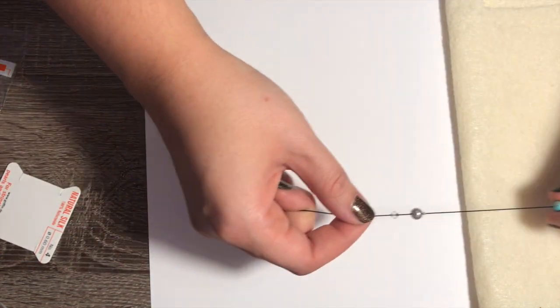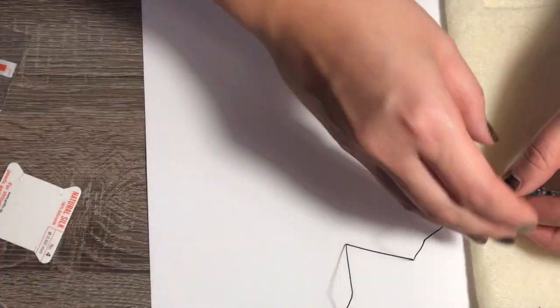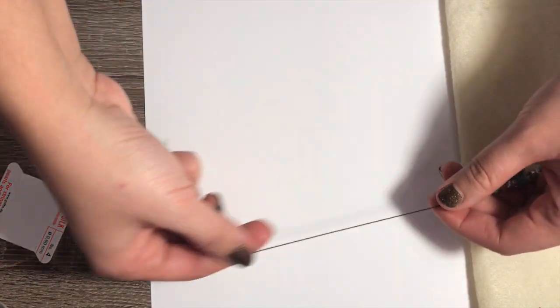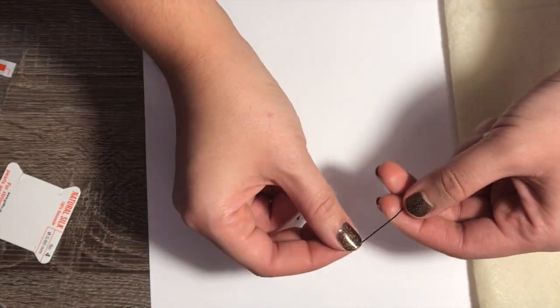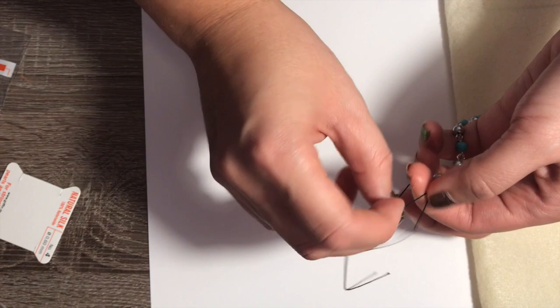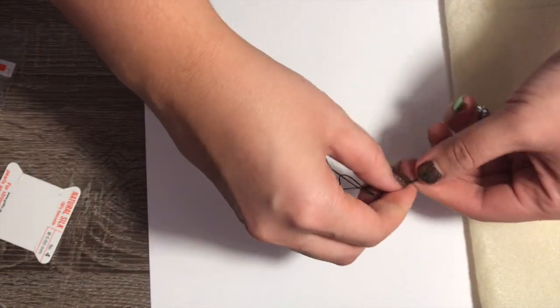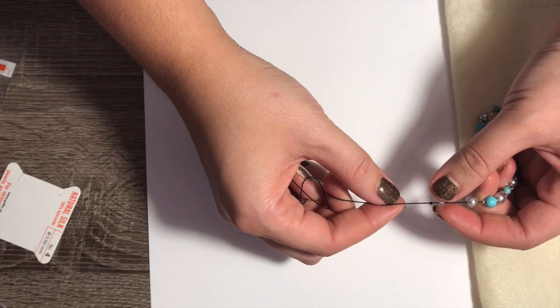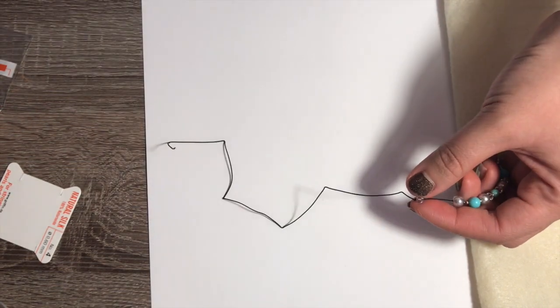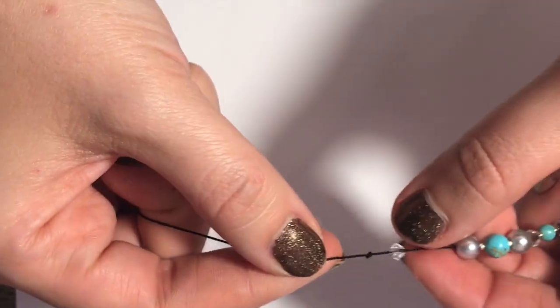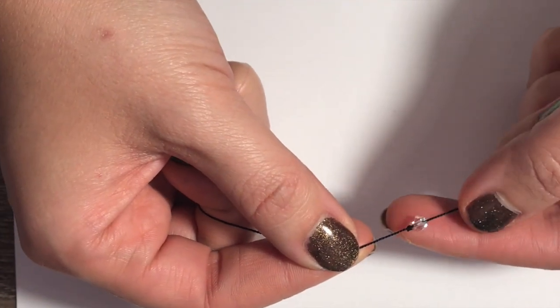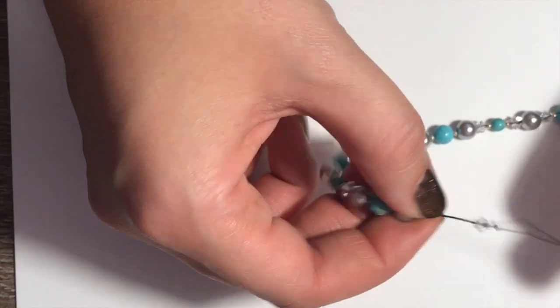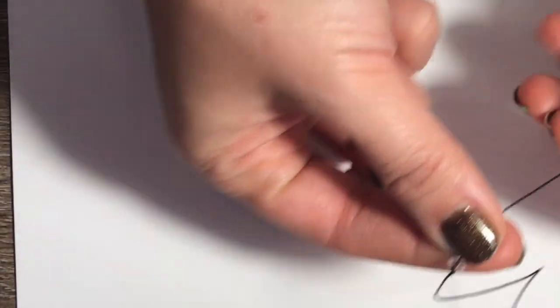The first thing you're going to do is you're going to tie a knot, and it's just a basic knot, just like that. Then you're going to pull the bead down. Make sure that knot is big enough so that the bead does not pass through the knot. And then what we're going to do is we're going to make another knot on the other side of the bead.